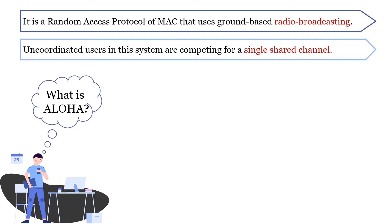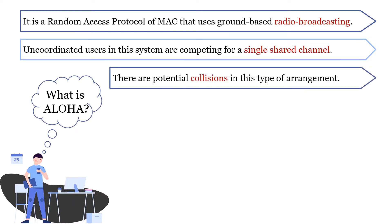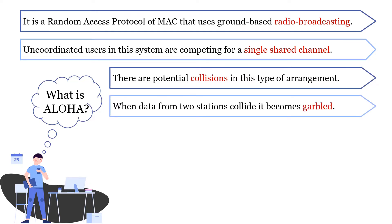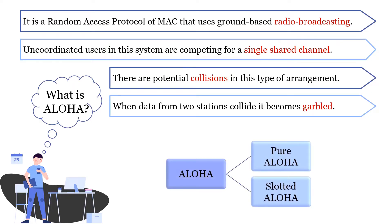Here the uncoordinated users compete to access a single shared channel, and because of this there is potential collision in this type of arrangement. Whenever there occurs a collision, the collided data is discarded. Further, Aloha is classified into two types: pure Aloha and slotted Aloha.